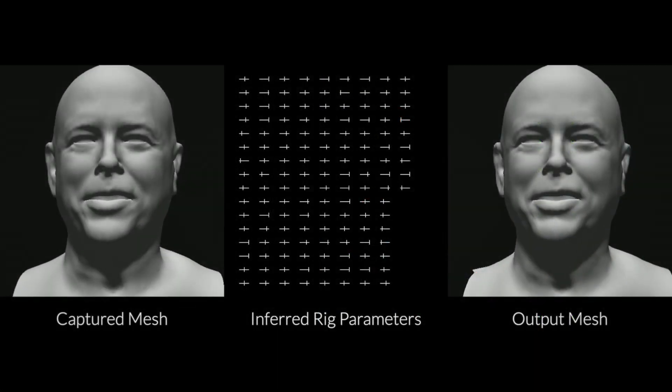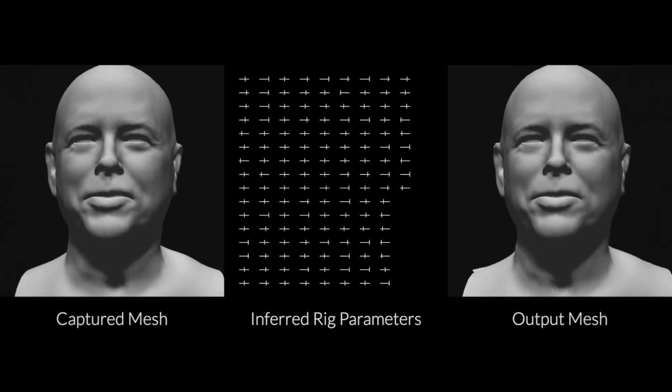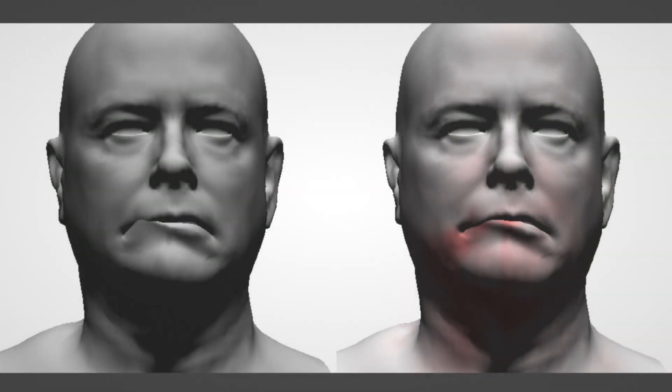Let's take another look at this method applied on captured data. Note that the rig parameters are smooth and as sparse as possible. When the input mesh is noisy or out of manifold, the method returns rig parameters for the closest solution in mesh space according to the mesh loss. This can be used to remove noise in the input data, whether captured or generated.